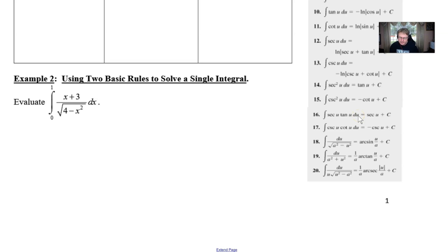So I'm going to go ahead and get us going. We have the definite integral from zero to one of x plus three over the square root of four minus x squared.